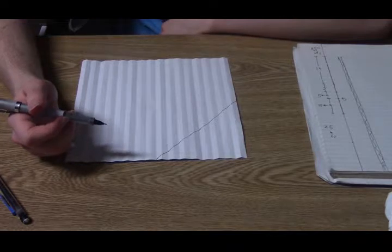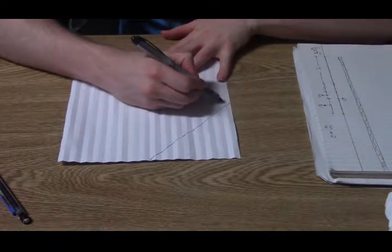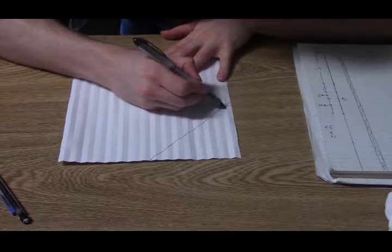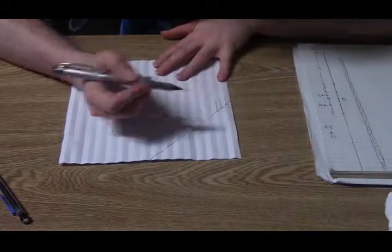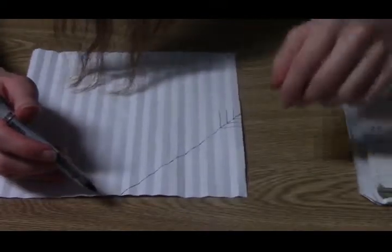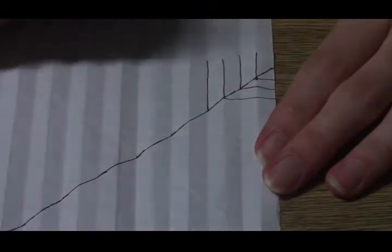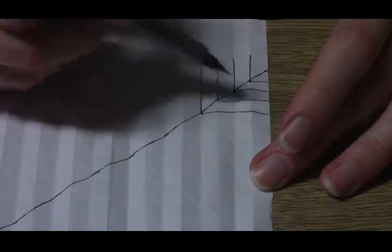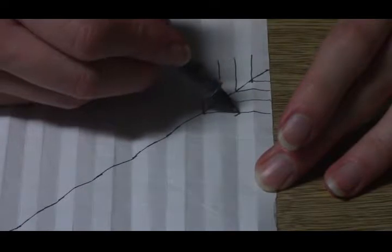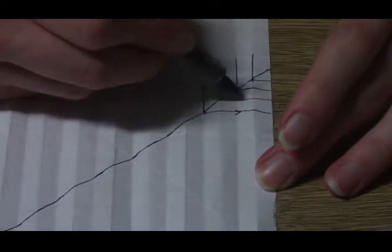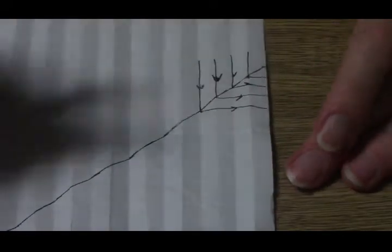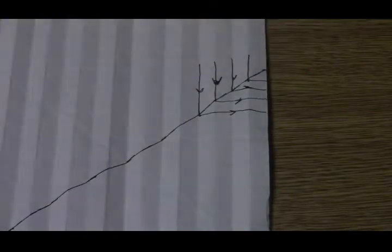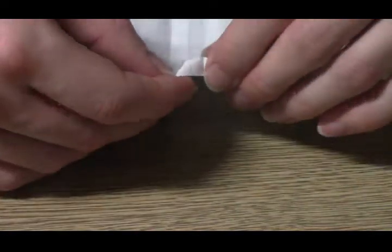Now we are going to fold like this. This valley fold here is going to intersect that diagonal, and then essentially ricochet off and go this way. So it goes this and here, and so on. You get the idea. I'm going to go ahead and do that, and I'll leave the camera running so you can see how it's done.